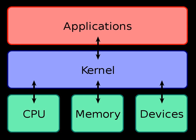Although Mach, developed at Carnegie Mellon University from 1985 to 1994, is the best-known general-purpose microkernel, other microkernels have been developed with more specific aims. The L4 microkernel family — mainly the L3 and L4 kernels — was created to demonstrate that microkernels are not necessarily slow. Newer implementations such as Fiasco and Pistachio are able to run Linux next to other L4 processes in separate address spaces. Additionally, QNX is a microkernel principally used in embedded systems, and the open-source software Minix, while originally created for educational purposes, is now focused on being a highly reliable and self-healing microkernel OS.